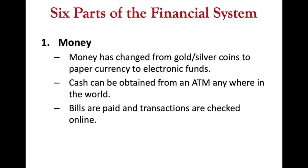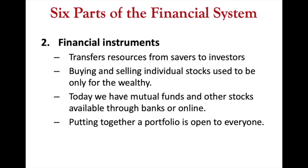Later came gold and silver coins, which you can often find in history museums. Then came paper currency and then electronic funds. You can get your cash from ATMs everywhere in the world. Some countries, like Iran, are cut off from the worldwide banking system — a Visa or MasterCard doesn't work there — but they've built their own parallel banking system with debit cards and ATMs. You can pay bills and transactions online; electronic funds are transferred back and forth.